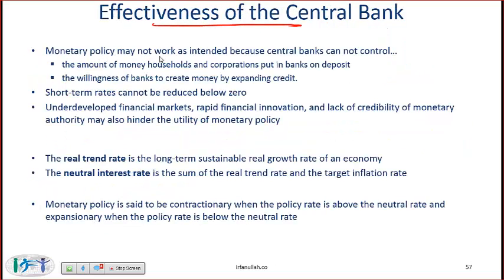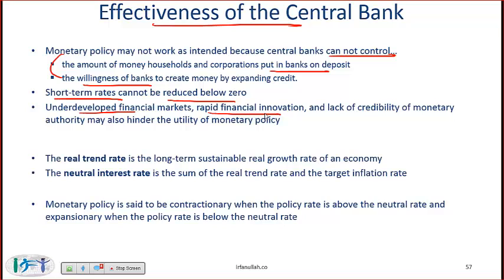Monetary policy may not work as intended because central banks cannot control the amount of money households and corporations put in the bank on deposit. With the fractional reserve system, the multiplier kicks in when a deposit is made, but the central bank cannot control how much people or corporations deposit. Also, the central bank cannot control banks' willingness to make further loans. Short-term interest rates cannot be reduced below zero, and deflation can be a huge problem, which is why central banks try to keep the inflation rate slightly positive — generally in the two to three percent range in developed countries. Underdeveloped financial markets, rapid financial innovation, and lack of credibility of the monetary authority may also hinder the effectiveness of monetary policy.